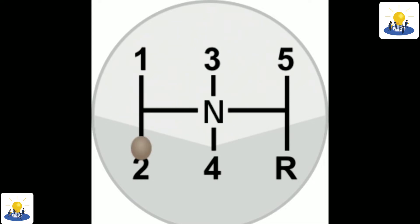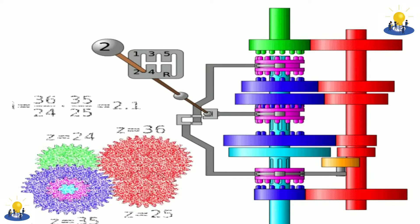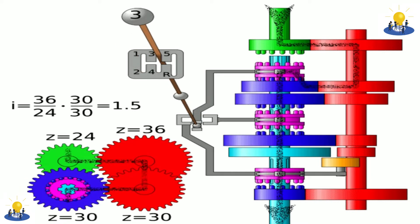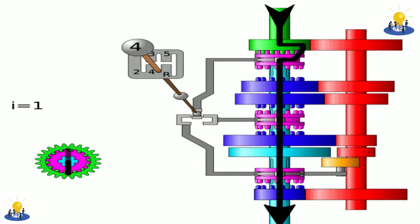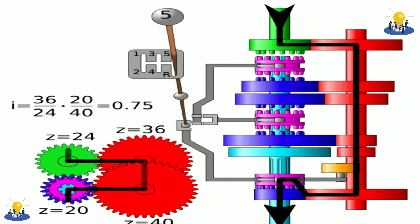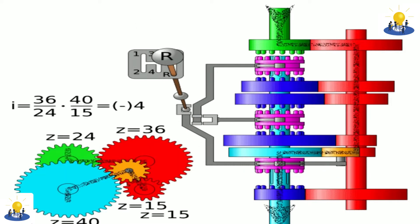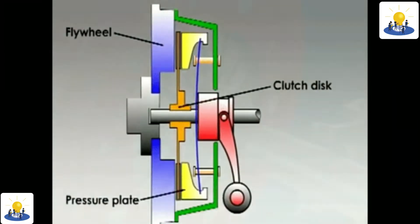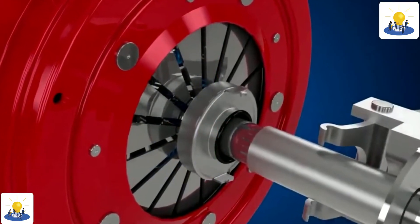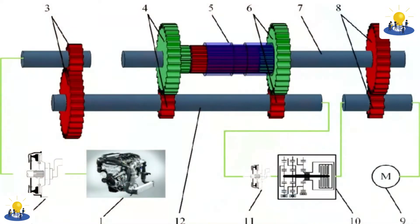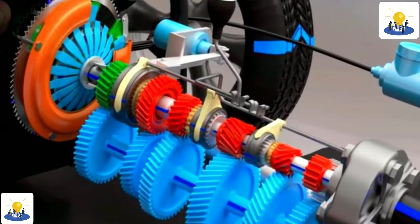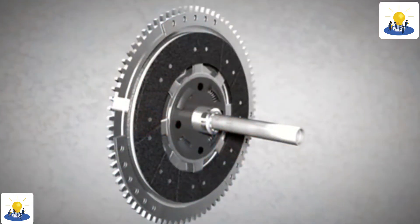In a vehicle with a manual transmission, the flywheel is attached to the engine's crankshaft, therefore rotating at engine speed. A clutch sits between the flywheel and the transmission input shaft, controlling whether the transmission is connected to the engine — clutch engaged, meaning the clutch pedal is not being pressed — or not connected to the engine — clutch disengaged, meaning the clutch pedal is being pressed down. When the engine is running and the clutch is engaged, the flywheel spins the clutch plate and hence the transmission.